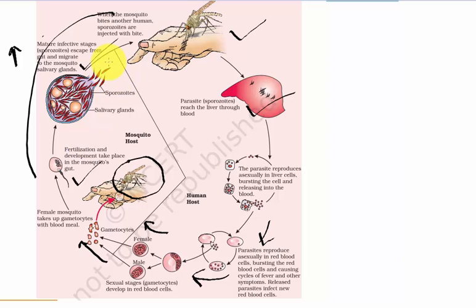This reaches the salivary glands of the mosquito, and hence, again there is an infected female Anopheles mosquito having plasmodium sporozoites in the salivary glands, ready to bite a healthy human being and transfer malaria to a healthy person.